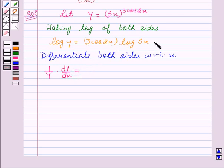Now we will apply the product rule here. We get the first term times the differentiation of the second term, that is d/dx of log 5x, plus the second term times d/dx of the first term, that is 3cos2x.